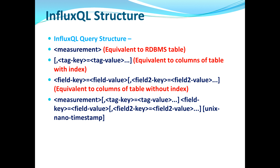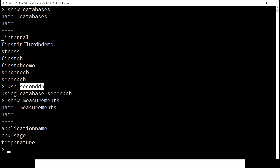The complete structure looks like: measurement, then a list of tag key-value pairs, then field key and corresponding field value, followed by a Unix timestamp — which we'll cover shortly. For example: INSERT cpus host=server2 region=us_east value=0.15. The table cpus is already there. The SELECT query looks the same as what we write against RDBMS — SELECT * FROM table_name.